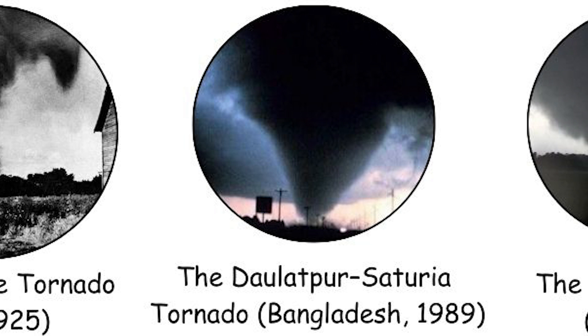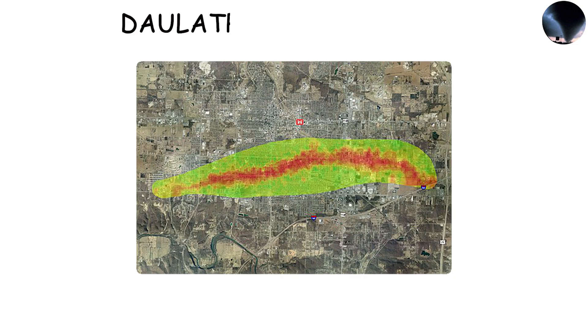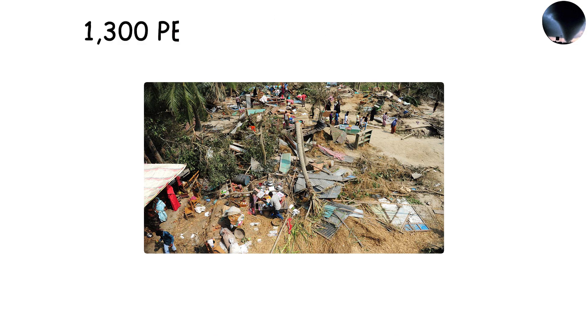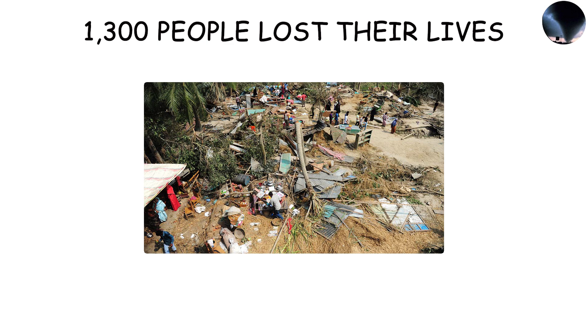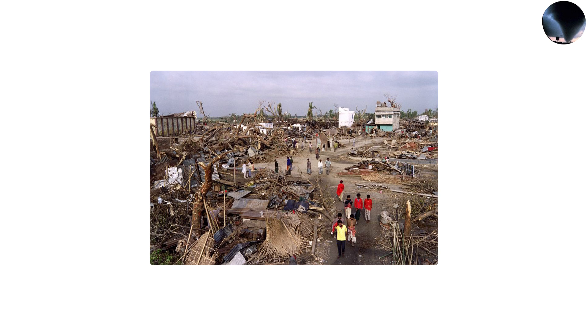The Tri-State Tornado changed the course of meteorological history in America and remains the benchmark for worst-case tornado scenarios. The Dalatpur-Saturia Tornado, Bangladesh, 1989. On April 26th, 1989, the deadliest tornado in world history struck Bangladesh, impacting the towns of Dalatpur and Saturia. Approximately 1,300 people lost their lives and more than 12,000 were injured.